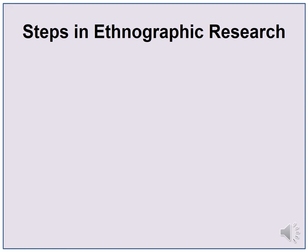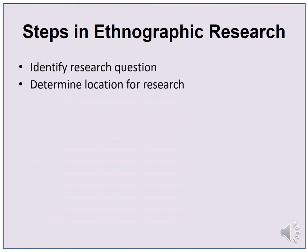Steps in ethnographic research. The first step is to identify the research question. Determine what problem you are seeking to better understand. Develop a problem statement that raises questions you seek to know more about. The next step is to determine the location for research. Identify the best place to conduct participatory research. You may choose more than one location if the research question or problem warrants it. Select a location that will provide the best opportunity to observe, participate, take field notes, and understand how the people in that environment act, communicate, and think.